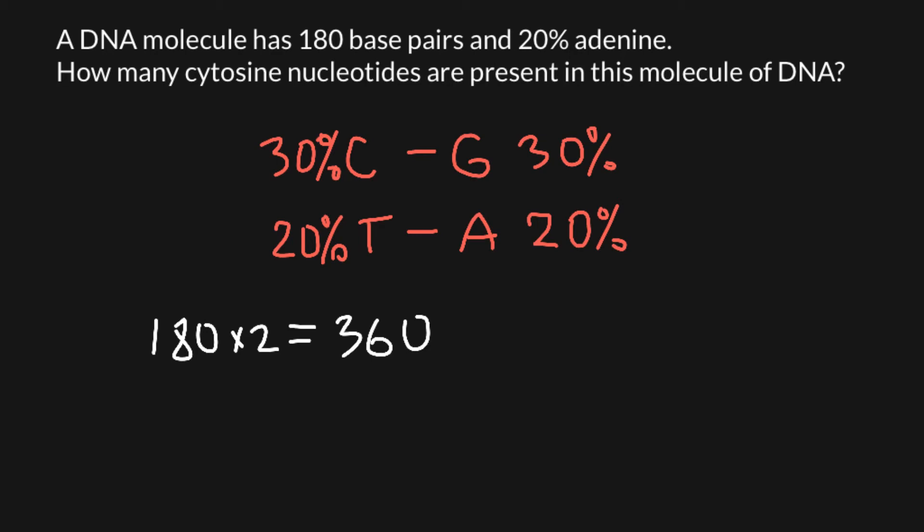So in order to find 30%, we just basically have to multiply 360 by 0.3 and the answer would be 108.